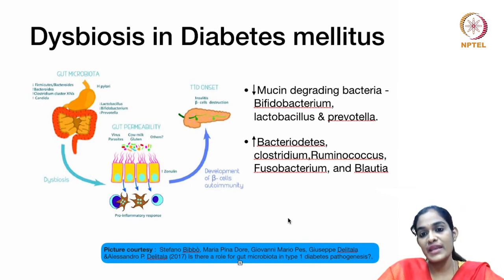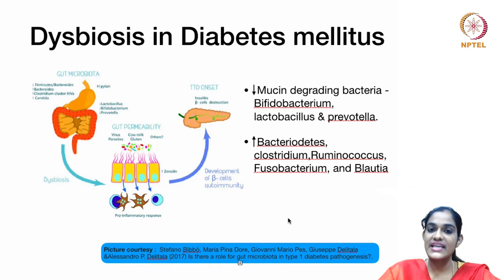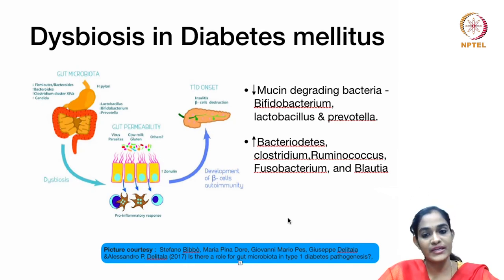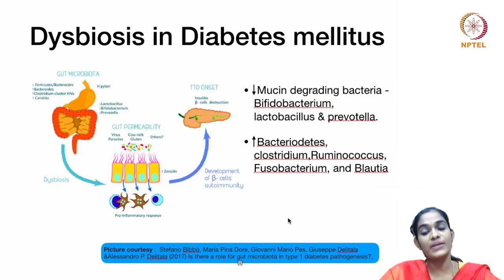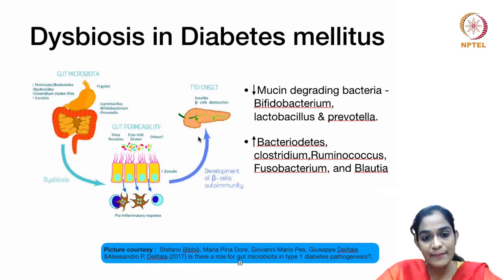Diabetes is a common chronic disorder with two types: type 1, an autoimmune disorder with less insulin production, and type 2, caused by insulin resistance. Dysbiosis is seen in both types, with decreased beneficial bacteria such as Bifidobacterium, Lactobacillus, and Prevotella, and a rise in pathobionts such as Bacteroides, Clostridia, Fusobacterium, Blautia, and Ruminococcus. These bacteria cause altered epithelial permeability, allowing antigens to traverse the lumen, eliciting a pro-inflammatory response, and ultimately leading to autoantibodies generated against the beta cells of the pancreas, causing insulitis.